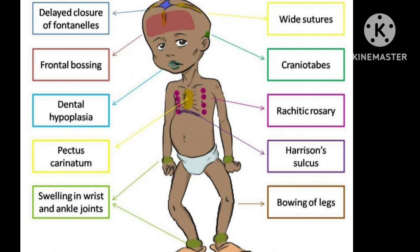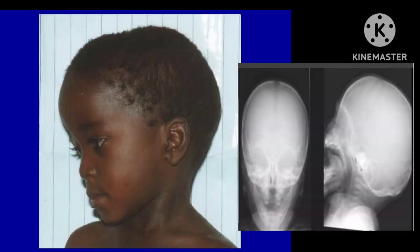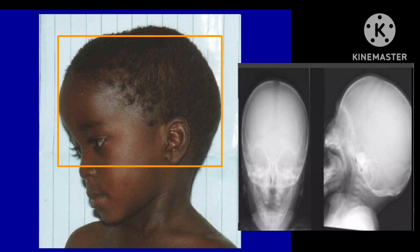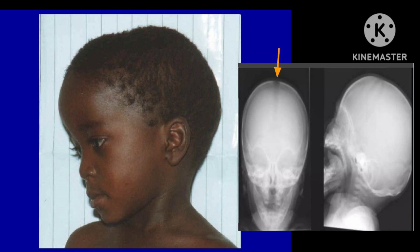Ricketts presents with certain signs and symptoms. General signs include delayed walking with a waddling gait. Head signs include craniotabes — a soft skull — frontal bossing giving a box-like or square-headed appearance, delayed fontanelle closure, delayed dentition, dental caries, and craniosynostosis.